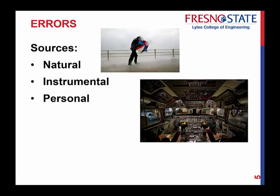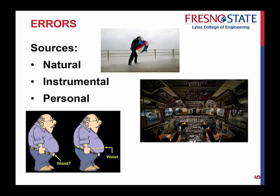The third source is personal errors — and these are not mistakes. Personal errors arise from limitations of your senses, such as sight and touch. An example would be a small error in an observed horizontal angle: looking through the instrument, you just can't quite get the crosshairs exactly on target. That's a personal error based on physical limitation, not carelessness.